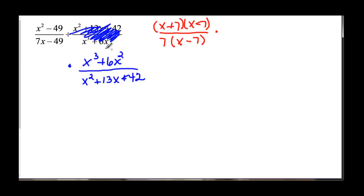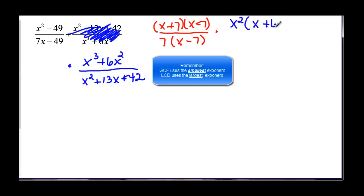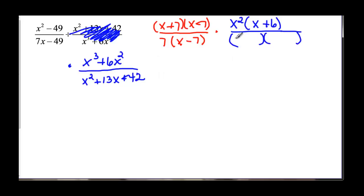And this one has a common factor of x squared. Leaving me with x plus 6. Take the smallest exponent remember. And then here it's an x squared first term. So I know that I need factors of 42 that are going to add up to 13. And the first factors I think of are 6 and 7. And those are exactly what work. And 6 plus 7 is 13. So now we're ready to reduce.